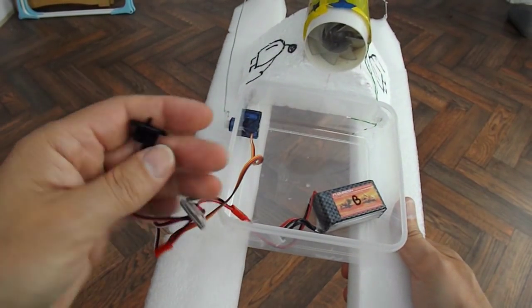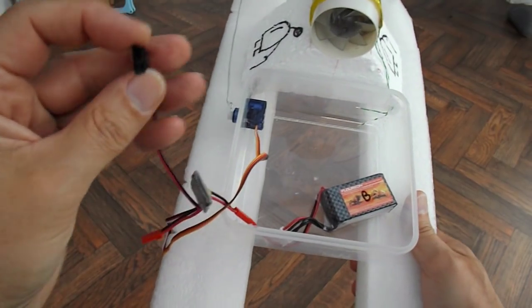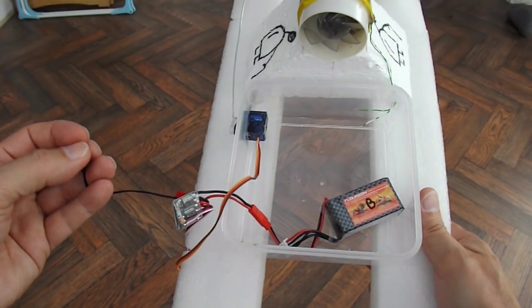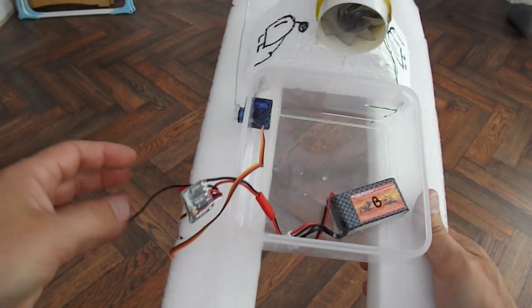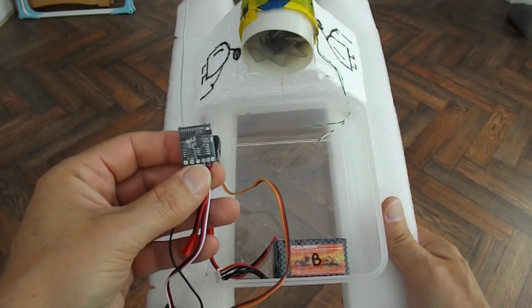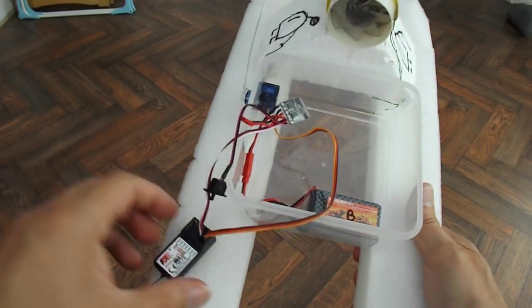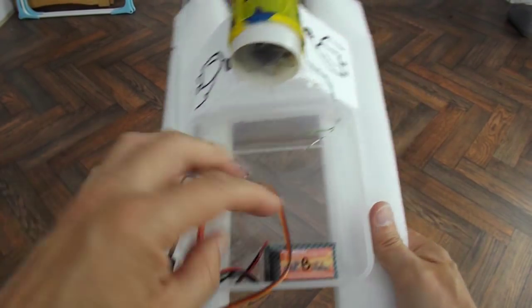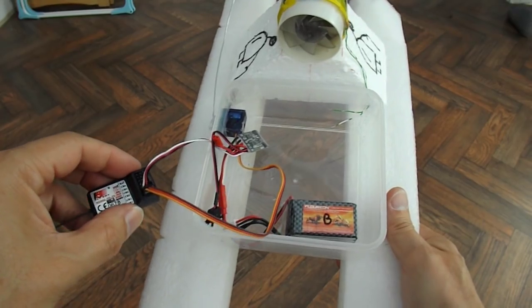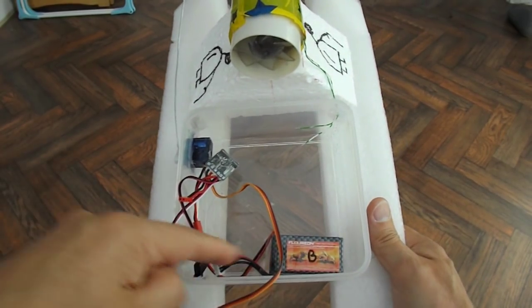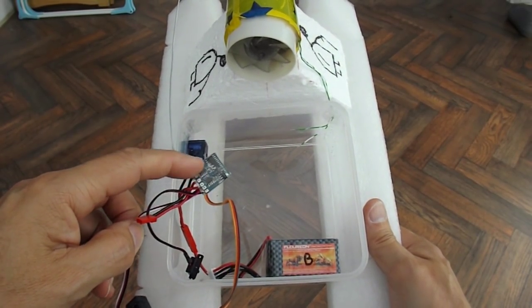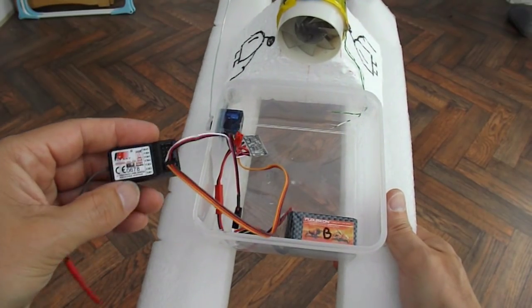That ESC also has an on off switch on it which is very handy. Trying to see that LED coming on when I switch it on and off. And it also has a built in BEC, which is a battery eliminator circuit, which means that you can run the receiver from that battery rather than having a separate battery to power the receiver. It actually feeds the battery through the ESC, drops it down to the right voltage to power the receiver.